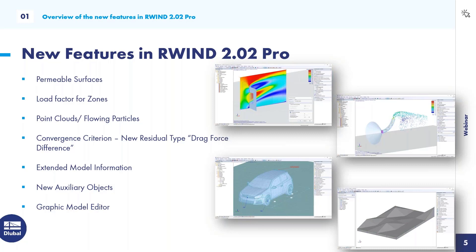Last but not least, I will later show you the new graphic model editor, and a model library was also added in this version. The first new feature I want to discuss is permeable surfaces. These are surfaces with a pressure condition where you can simulate a pressure drop on the backside to reduce wind speed — for example, for textile membranes that are neither fully closed nor fully open.